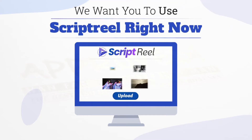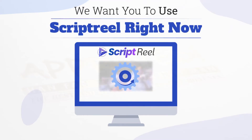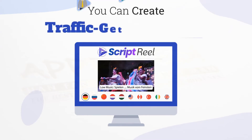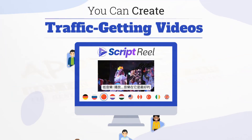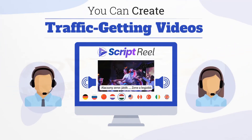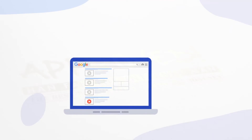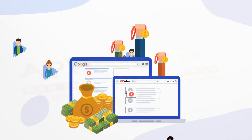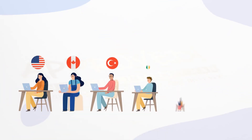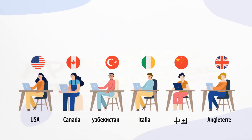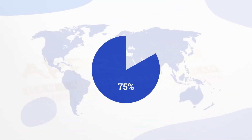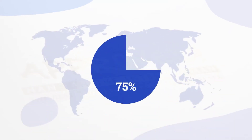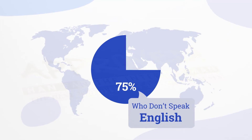You're fully covered by our 14-day traffic domination guarantee. Use ScriptReel right now and see how quickly and easily you can create traffic-getting videos that are captioned, subtitled, and translated — ready to rocket to the top of Google and YouTube and send you leads and sales for free, day after day. See how much more exposure you'll get with captions, subtitles, and audio translations.